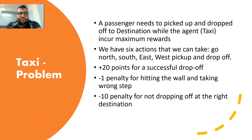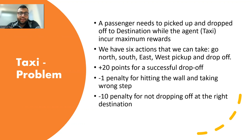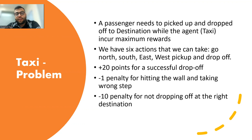So what is the taxi problem? In this problem, a passenger needs to be picked up and dropped off to the destination while the agent — the taxi — earns maximum rewards. In this problem, we have six actions: the taxi can go north, south, east, west, pick up, and drop off. For each successful drop-off, it receives 20 points. Each time it hits a wall or takes a wrong step, it incurs a negative one penalty. There's also a penalty of negative 10 for not dropping off at the right destination.